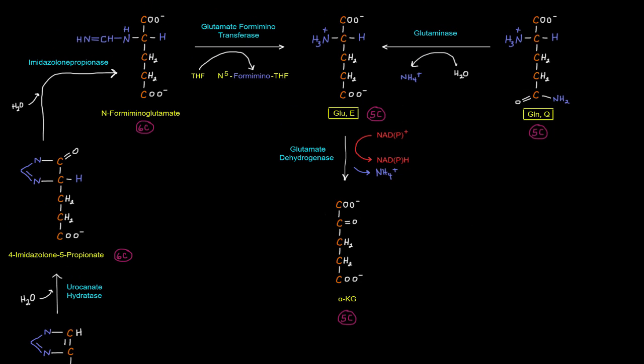And that can be converted into N-form-aminoglutamate by this enzyme imidazolone-propionase. And what you'll notice is that this portion of the molecule looks a lot like glutamate. Really, we just have this excess portion here hanging on to that alpha-amino group. And that is specifically a form-amino group. And that's why it's called N-form-aminoglutamate.